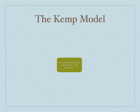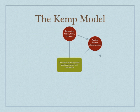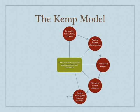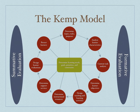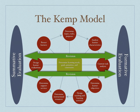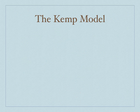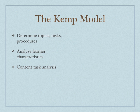Finally, the Kemp model. You start out by determining learner needs and move on to determining topics, tasks, and purposes. You analyze the learner characteristics, conduct a content task analysis, determine the learner objectives, design teaching and learning activities, then determine the instructional resources. Support services need to be identified, then you design the evaluations and pre-test the learners. Once all this is completed, you do your teaching, provide summative and formative evaluations, and at the very end you revise your instruction. There are nine steps in the Kemp model.